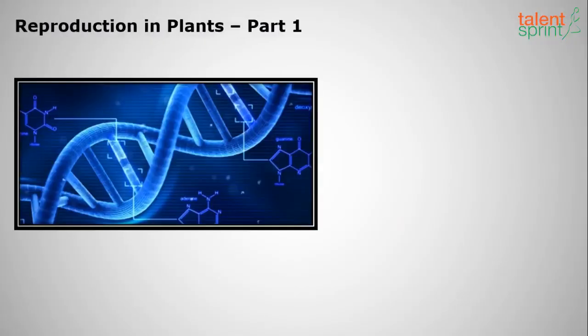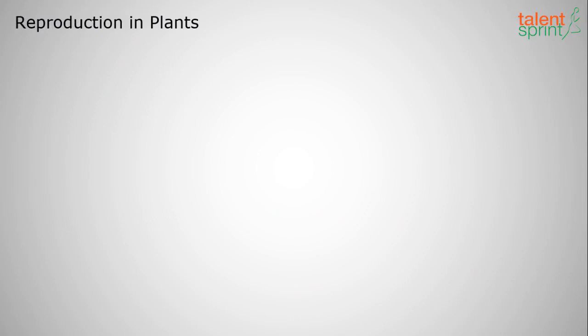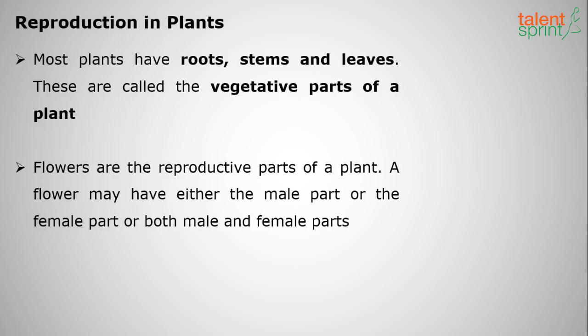Welcome to Talent Sprint. In this session of biology, we shall discuss the topic called reproduction in plants. Plants must reproduce so that they grow in numbers, giving us more oxygen and absorbing carbon dioxide from the atmosphere, helping control global warming. Plants have roots, stems, and leaves, which are called the vegetative parts of a plant.